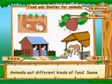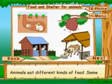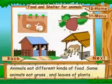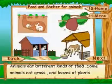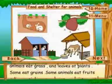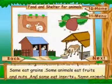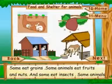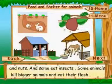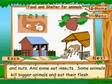Food and shelter for animals. Animals eat different kinds of food. Some animals eat grass and leaves of plants, some eat grains, some eat fruits and nuts, and some eat insects. Some animals kill bigger animals and eat their flesh.